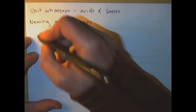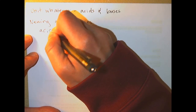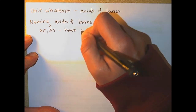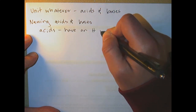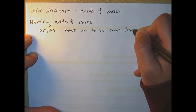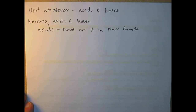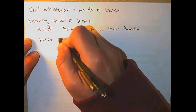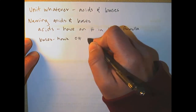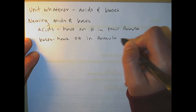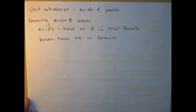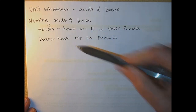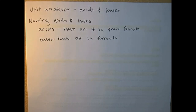To name acids, you want to first be able to identify them on paper. Acids have an H in their formula — H stands for hydrogen. Bases have an OH in their formula, and that stands for hydroxide. We'll learn later that this is not always the case, but this is a really good way to identify acids and bases on paper.